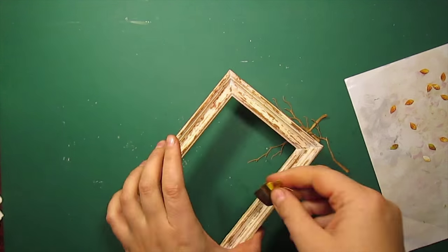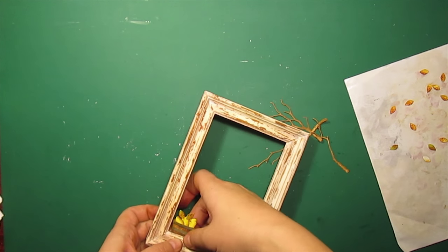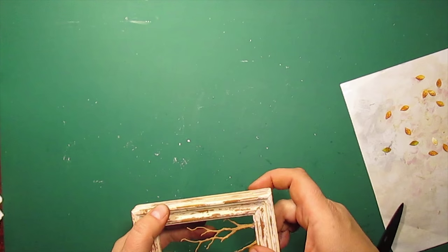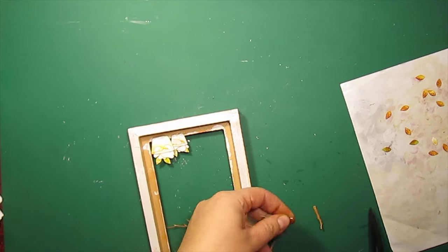I'm putting some hot glue to the frame to attach the pear baskets. Then, I'm sticking down the branches also using the hot glue.